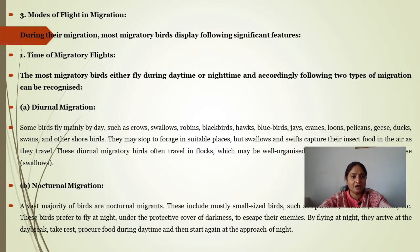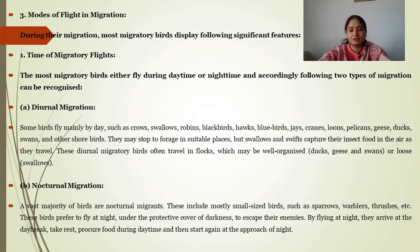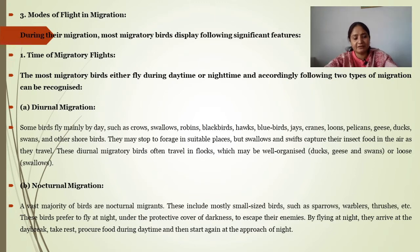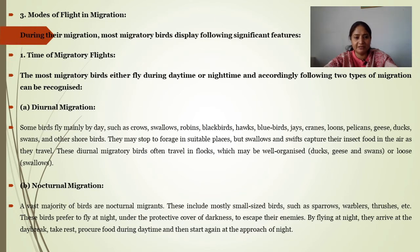Regarding the mode of flight, we can consider duration of time and speed. First, diurnal versus nocturnal migration. Some birds migrate during the day — such as crows, swallows, robins, blackbirds, bluebirds, cranes, geese, ducks, and swans. Swallows and swifts capture their insect food in the air as they travel. These diurnal migratory birds often travel in flocks.